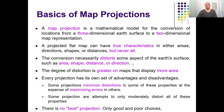A map projection is a mathematical model — what we imagined — that we can reproduce to convert locations of a three-dimensional Earth's surface to a two-dimensional map representation. The projected flat map can have true characteristics of any one property: you can maintain area, direction, shape, or distance very accurately. But keep in mind, you can never truly represent all these characteristics in a single projection. Map projections always distort some aspects of the Earth's surface — either area, shape, distance, or directions.